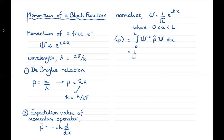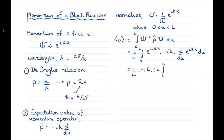Substituting in for the wave function, we have one over l, integral from zero to l of e to the minus ikx times minus i h-bar times d by dx of e to the ikx, dx. Taking the derivative gives minus i h-bar times ik. Then e to the minus ikx times e to the ikx is just one, so we integrate one from zero to l, giving a factor of l that cancels the normalization, and we obtain h-bar times k.